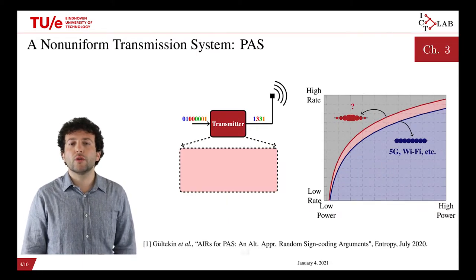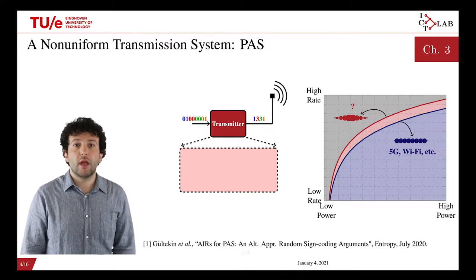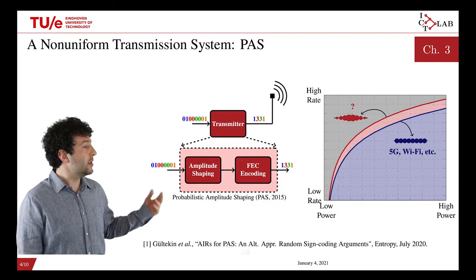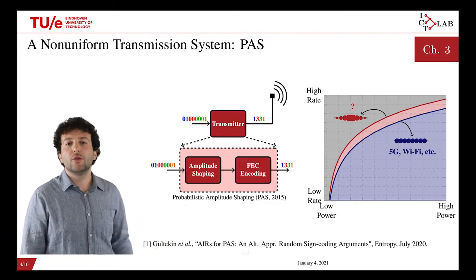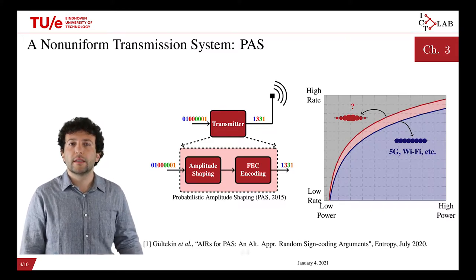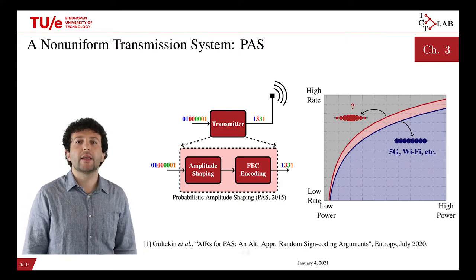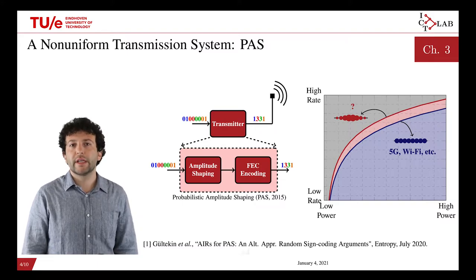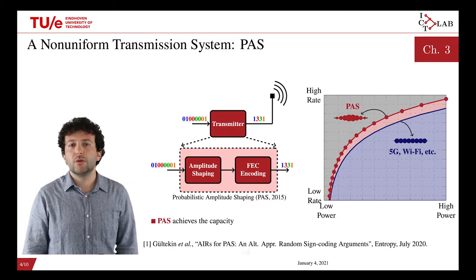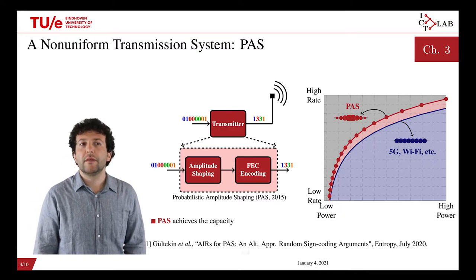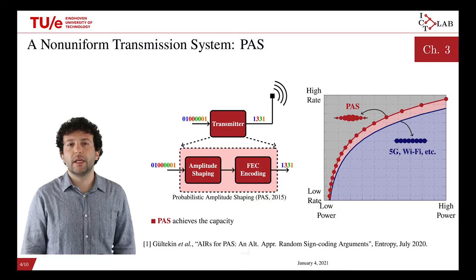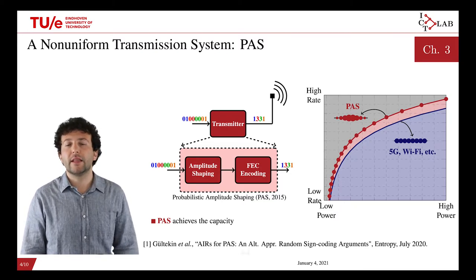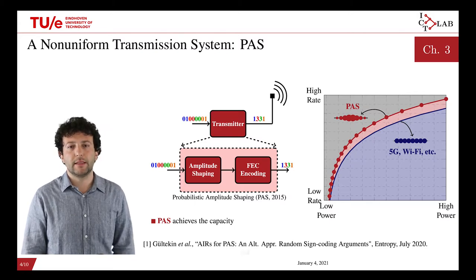First, we focused on a recently proposed non-uniform transmission strategy called probabilistic amplitude shaping (PAS), which was proposed in 2015. PAS consists of two layers: an amplitude shaper that converts bits into amplitudes, and then a forward error correction encoder that adds coding redundancy so that errors can be detected and corrected at the receiver. Our contribution is that we showed PAS achieves the capacity of a certain class of channels, using tools from information theory such as typicality and random coding arguments.